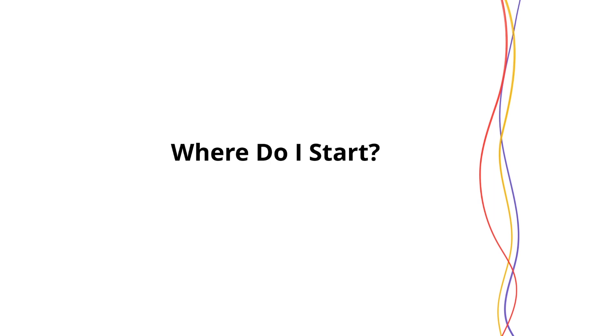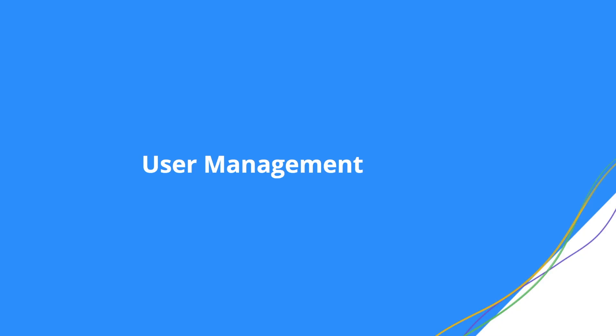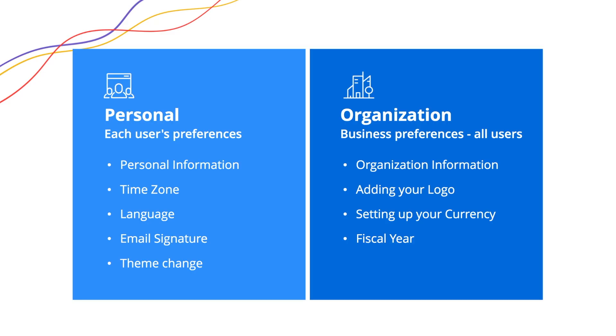It can be a little intimidating trying to figure out where to start with your CRM. A good way to start is by managing the users and your organizational and personal preferences — what we call personal settings and company details. Personal settings are going to vary per user and allow users to add personal information important to them, sometimes based on their geographic location. Admins will be able to add company details that apply across the board to each user within the CRM.